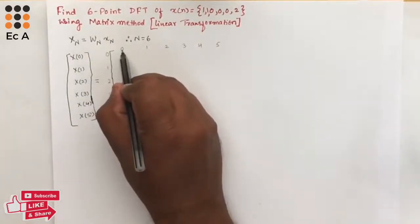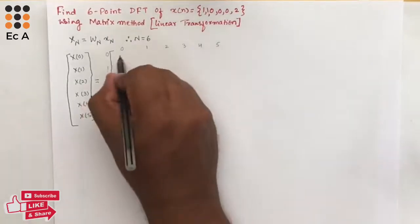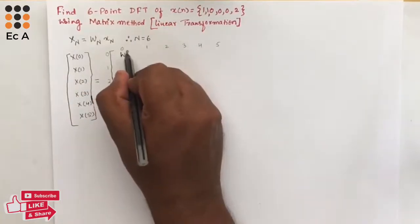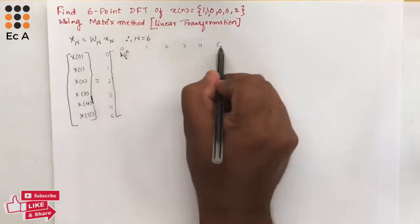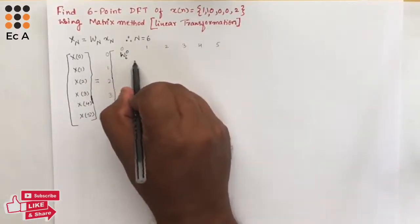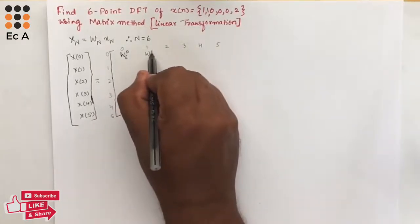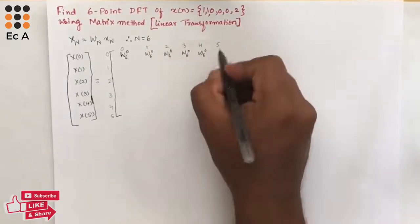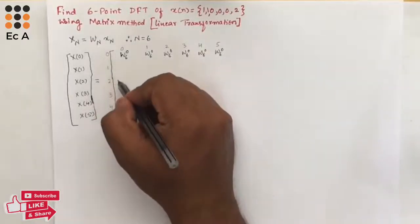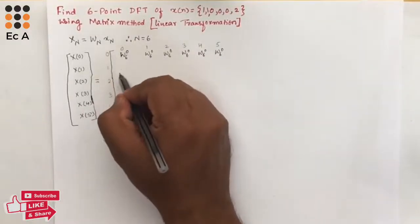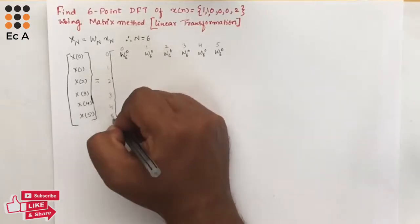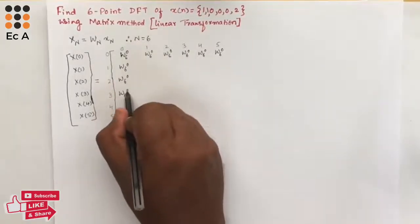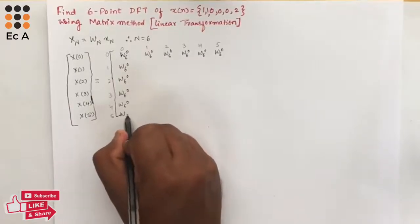Since N equals 6, we write W6. For row 0: 0 multiplied with any value is 0, so the entire first row is W6 to the power of 0. Similarly, for column 0: any value multiplied with 0 is 0, so the entire first column is also W6 to the power of 0.